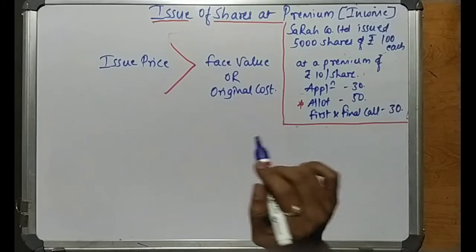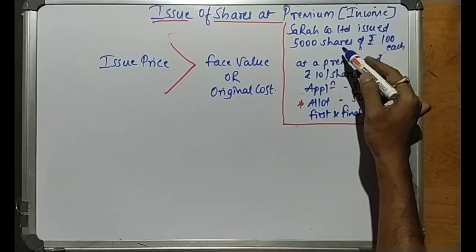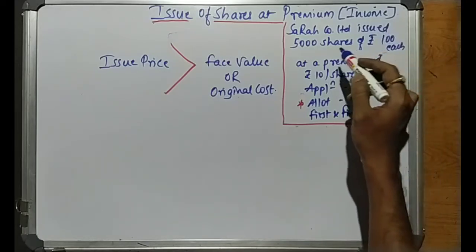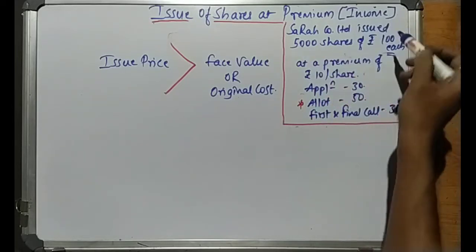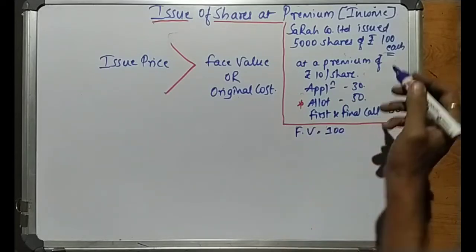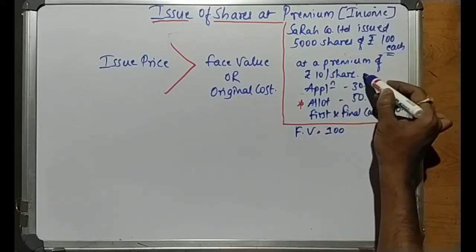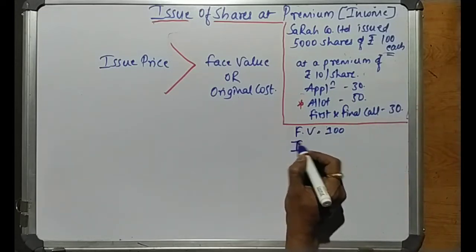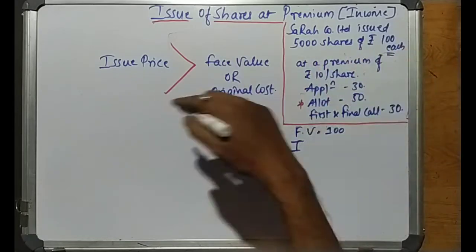Let's discuss in detail with the help of an example. A company called Sara Limited has issued 5,000 shares of rupees 100 each at a premium of rupees 10 per share. So the face value is rupees 100 per share, and shares are issued at a premium of rupees 10 per share — meaning you pay 10 rupees extra per share.